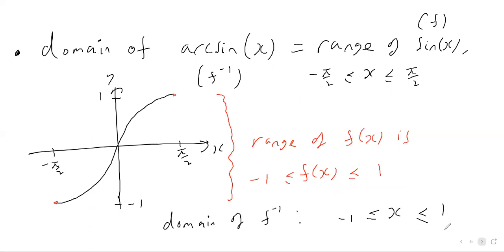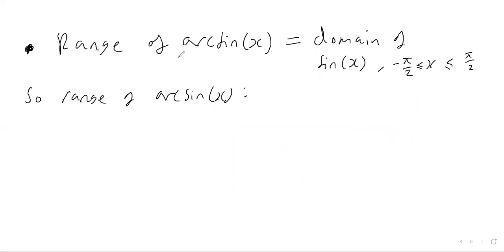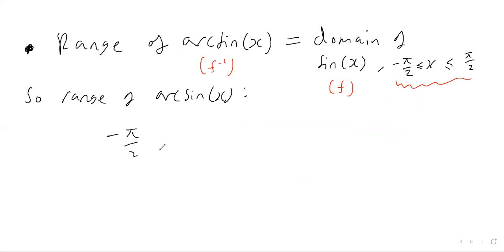How about the range of arc sine? Remember, the range of an inverse function is the same as the domain of the initial function. We've specified the domain of sine as minus π/2 to π/2, so the range of the arc sine function is going to be that same set — f inverse of x between minus π/2 and π/2. That's how the arc sine graph works.